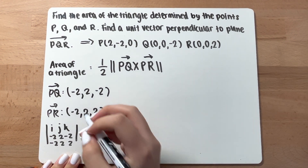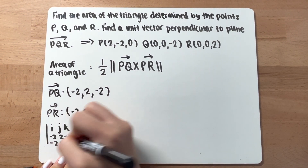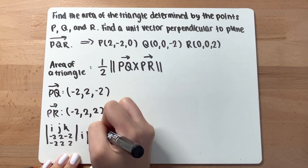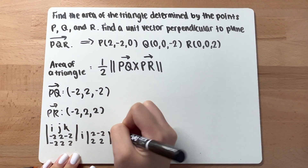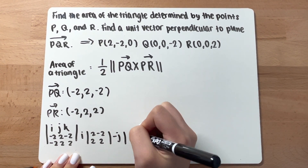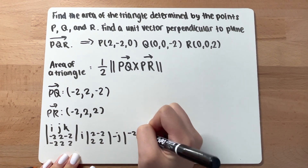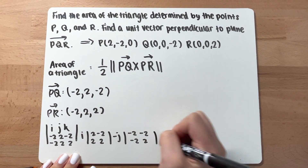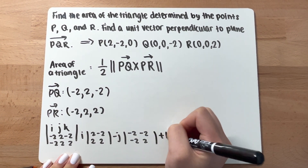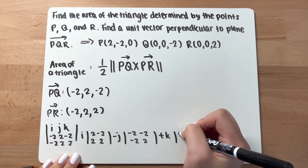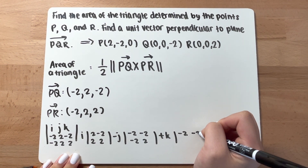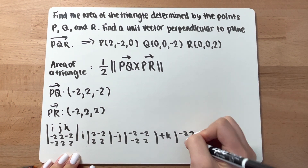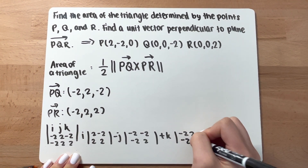Setting up the determinant: for i you have 2, 2, 2, negative 2; minus j you have negative 2, 2, negative 2, 2; plus k you have negative 2, negative 2, 2, 2.